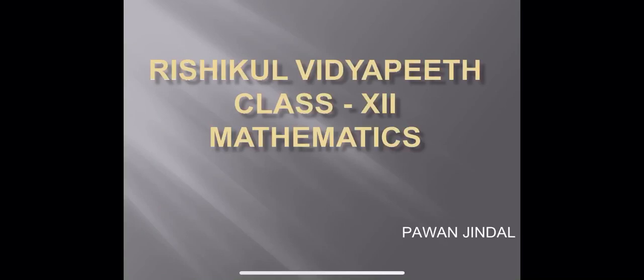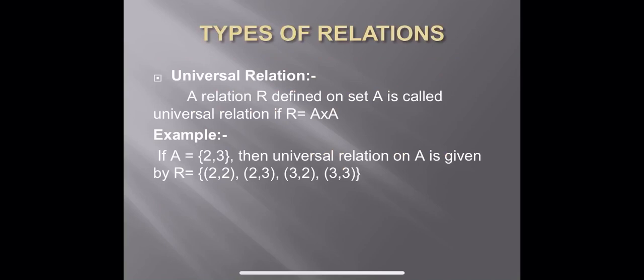Good morning students, welcome to the second lecture of the chapter Relations and Functions. In this lecture we will study about types of relations. The first relation is the universal relation. A relation R defined on set A is called universal relation